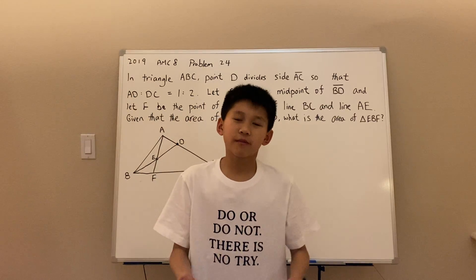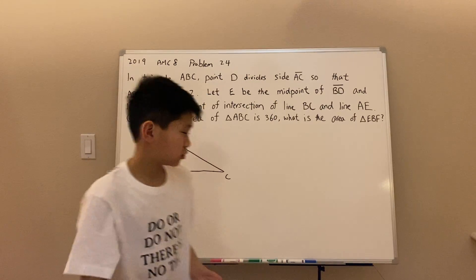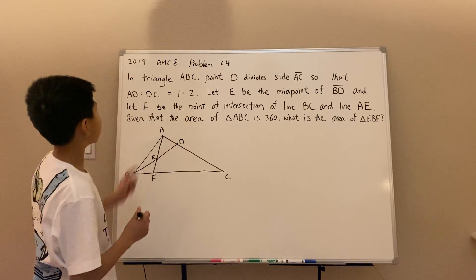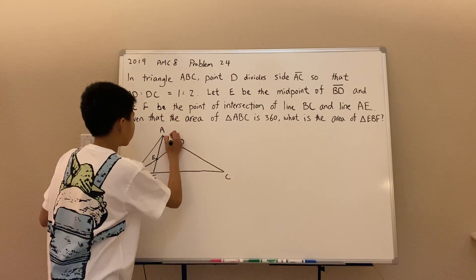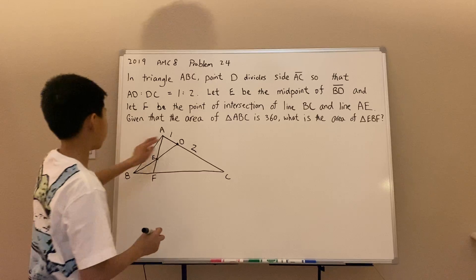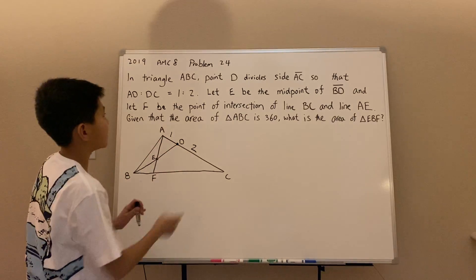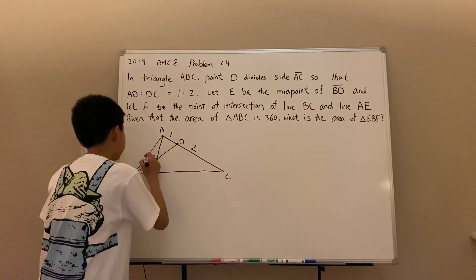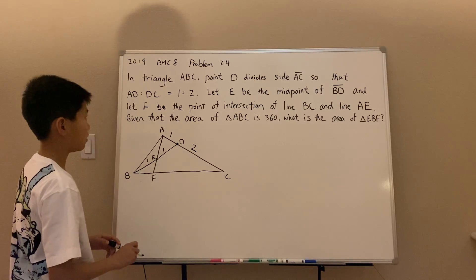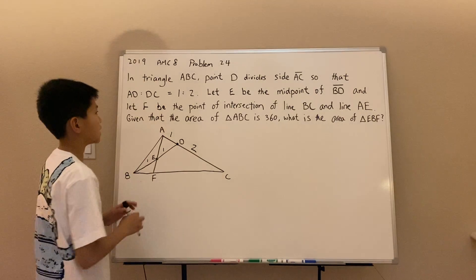So the problem gives us some information, so let's label that on a triangle. AD to DC is 1 to 2. So we can label AD to DC 1 to 2. And E is the midpoint of BD, which means BE to ED has to be 1 to 1, because they are the same.